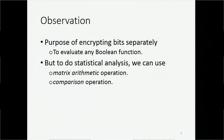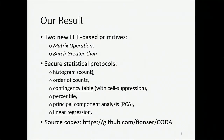Encrypting each bit enables us to evaluate any Boolean function on encrypted data, but what we want to do is statistical analysis. To do such computation, we can use two kinds of operations: matrix operations and comparison operations. In our research, we first propose two primitives — one for matrix operations and one for batch greater-than operations — from homomorphic encryption. On top of these two primitives, we show how to conduct a wide range of statistics. In this talk, I will cover two of them: a contingency table and linear regression.